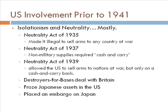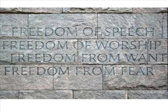Then we have the Destroyers for Bases deal with Britain, and our Lend-Lease program. We also froze all Japanese assets in U.S. banks and placed an oil embargo on Japan. So we really did choose a side — we were just saying we were neutral, but we weren't actually sending troops or weapons unless it was being paid for in some way.